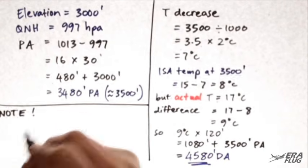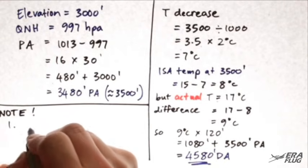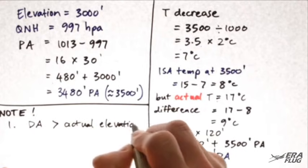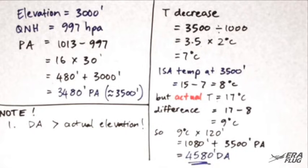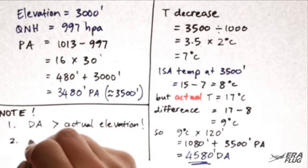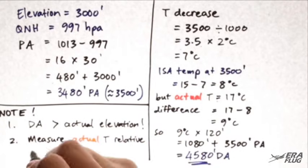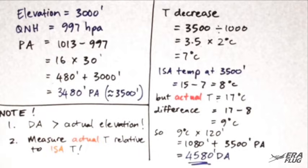Please note that the density altitude is over 1,500 feet higher than the actual elevation. You need to be careful, because although your aircraft is only at an elevation of 3,000 feet actual, it performs as if it's at 4,500 feet. Remember to measure your actual temperature relative to ISA temperature to obtain your density altitude. Thanks for watching — I hope this helps you with your calculations, and see you soon with the next one from Ereflug.